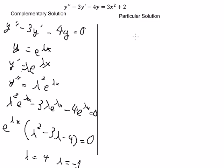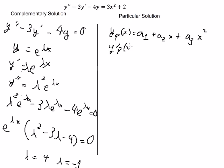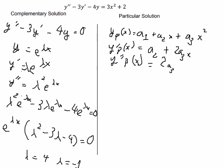Now let's go to the particular solution. In this situation, we set y_p of s equal to A1 plus A2 times s plus A3 times s squared. If we take the first derivative, we get A2 plus two A3 s. If we take the second derivative, we get two A3.